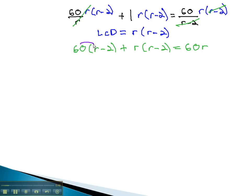We can continue solving by distributing through parentheses to get 60r, minus 120, plus r squared, minus 2r, equals 60r.